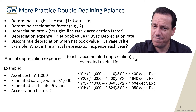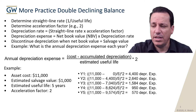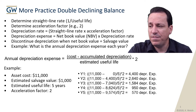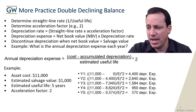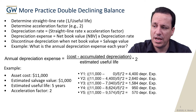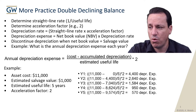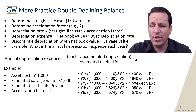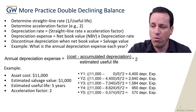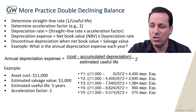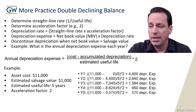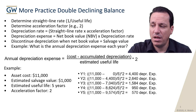In year five — this asset has a five-year life — if we do the same thing, we have $950 plus $1,584 plus $2,640 plus $4,400, giving us a total of $9,574. We net that against $11,000, divide by five, times two, and we get a depreciation expense of $570.